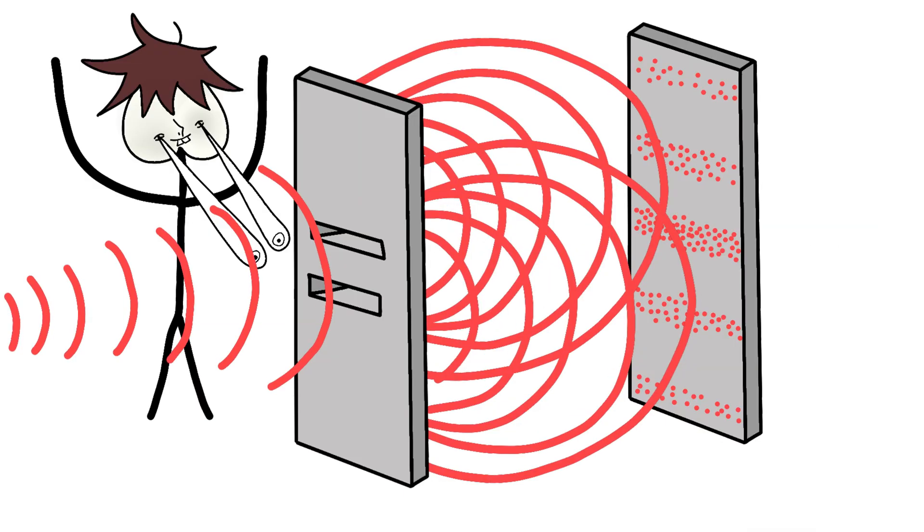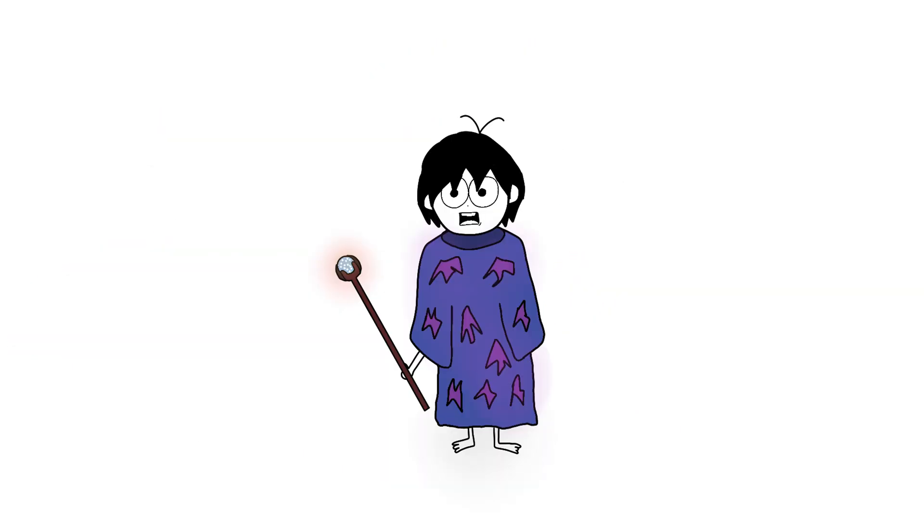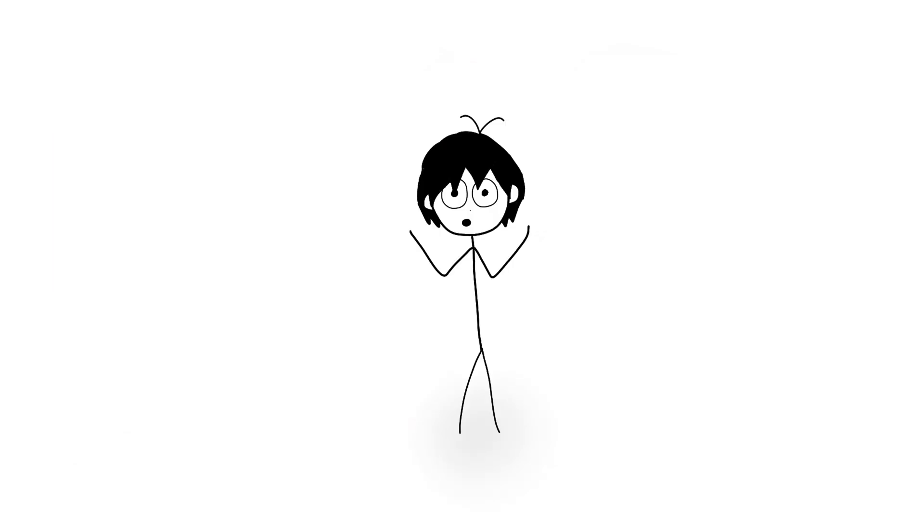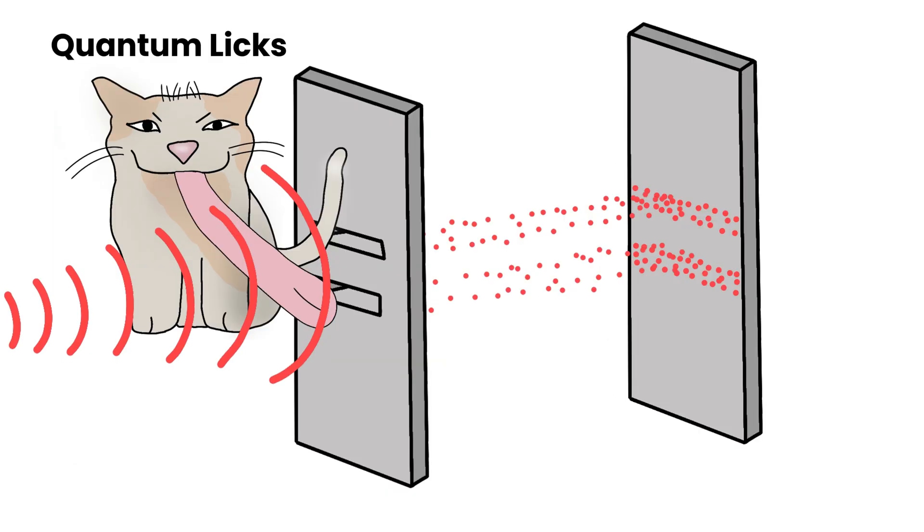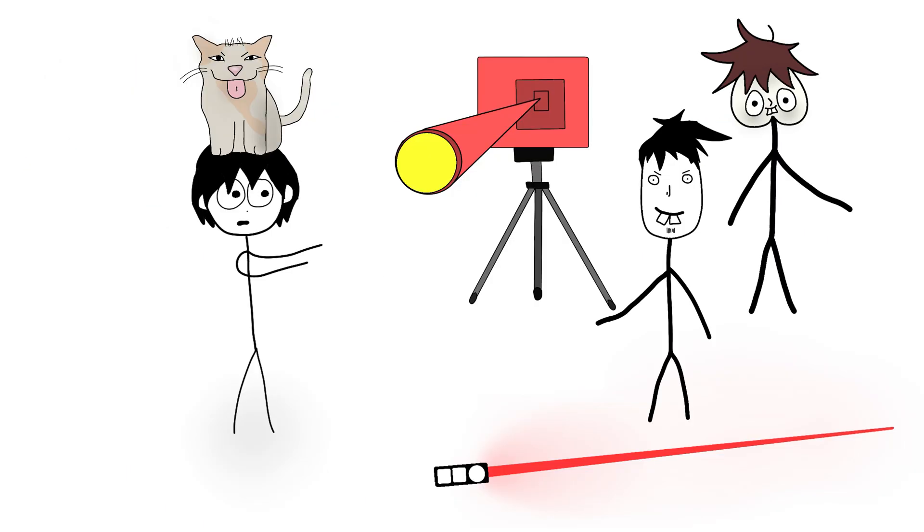So no, the observer did not create anything. They just interfered with the system, and that affected the result. And again, it doesn't matter who or what the observer is. It could be a machine, a beam of photons, or even a quantum kitty giving quantum licks near the slit. Doesn't matter if its eyes are open or closed. If it interferes enough to knock the particle out of superposition, boom, it's the observer.